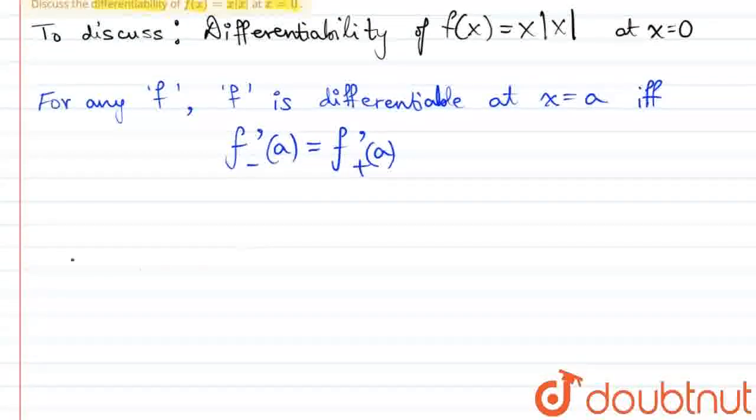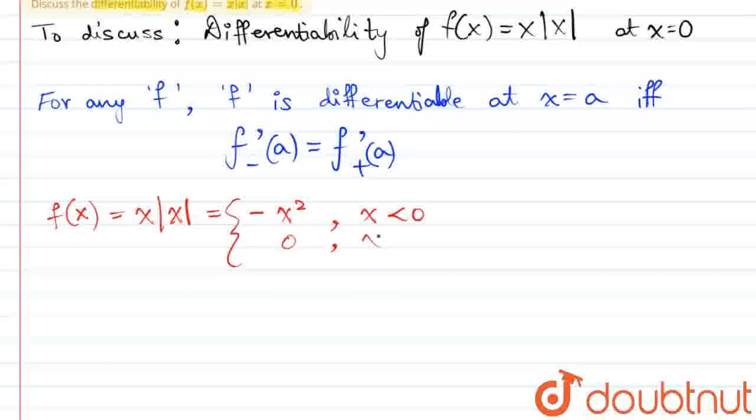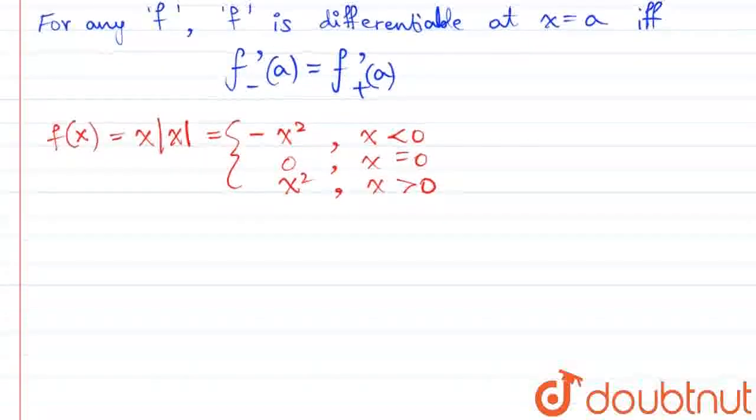In order to find these derivatives, let us first redefine our function f(x), which we know as x mod x, to form a piecewise function. So, f(x) will be negative x squared if x is less than 0, 0 if x equals 0, and positive x squared if x is greater than 0. These will be used to find each of the derivatives.